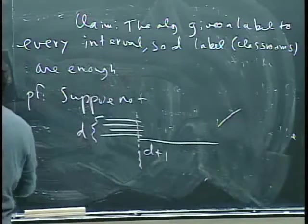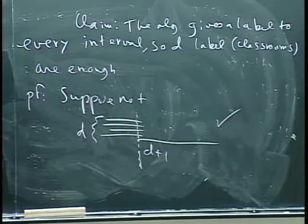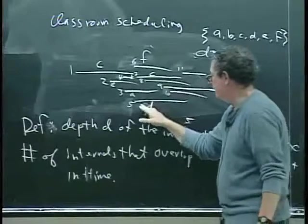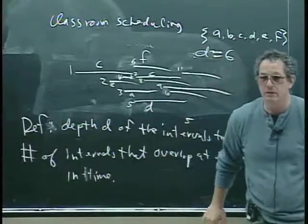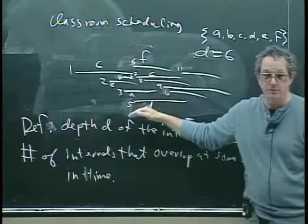So proof is done. And therefore, the algorithm works. Therefore, D is sufficient. So it's a cute algorithm and a nice way of proving that the minimum number of classrooms that are needed is exactly equal to the depth, is actually exactly equal to D.